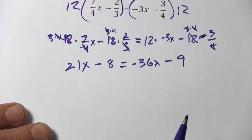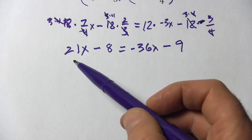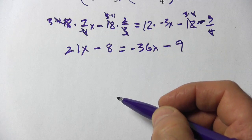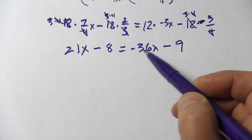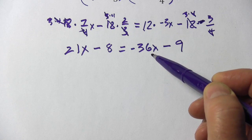Alright, I think I did all that correctly. Now, we've got x on both sides of the equation. So how do we deal with that? Well, we want to make one of these x terms disappear.